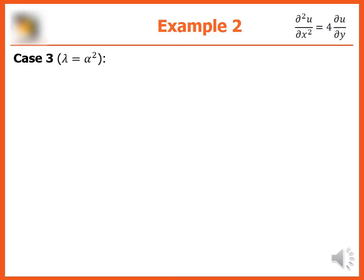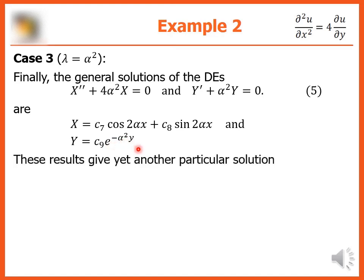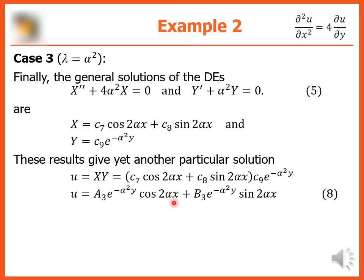For case 3, lambda equals alpha squared: the general solutions are X = c₇ cos(2αx) + c₈ sin(2αx) and Y = c₉ e^(−α²y). This gives another particular solution u = (c₇ cos(2αx) + c₈ sin(2αx))·c₉ e^(−α²y), or u = a₃ e^(−α²y) cos(2αx) + b₃ e^(−α²y) sin(2αx), where a₃ = c₇c₉ and b₃ = c₈c₉.